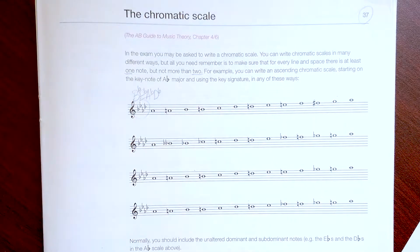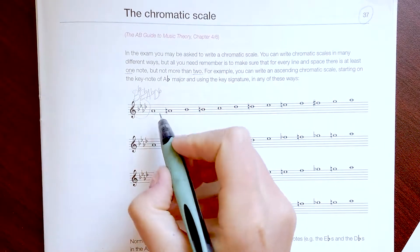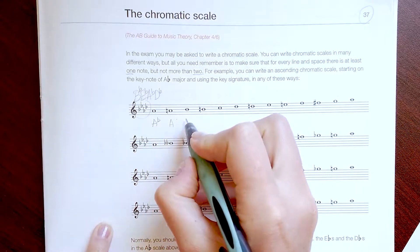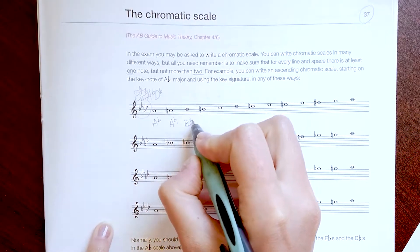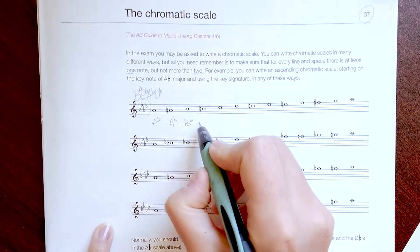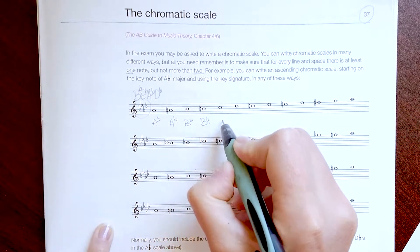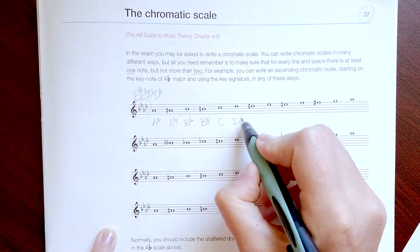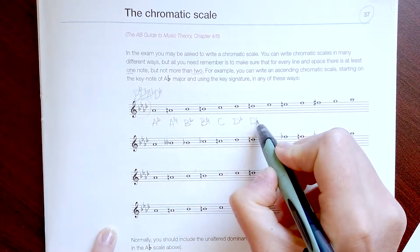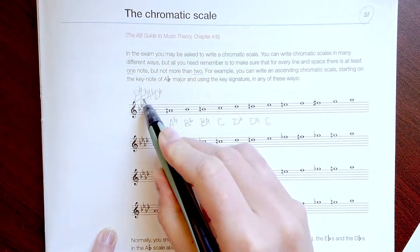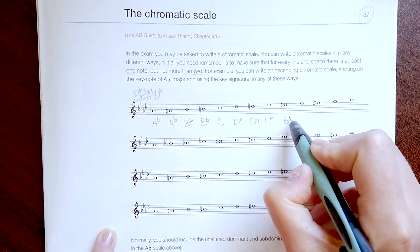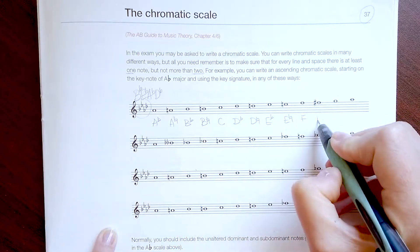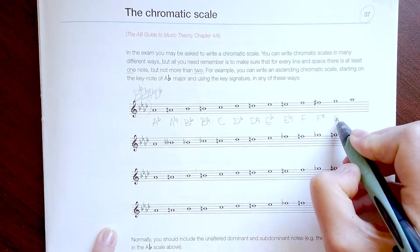We start from the note A flat, then A natural, B flat, B natural, C, D flat, D natural, E flat, E natural, F, F sharp, G, and A flat.